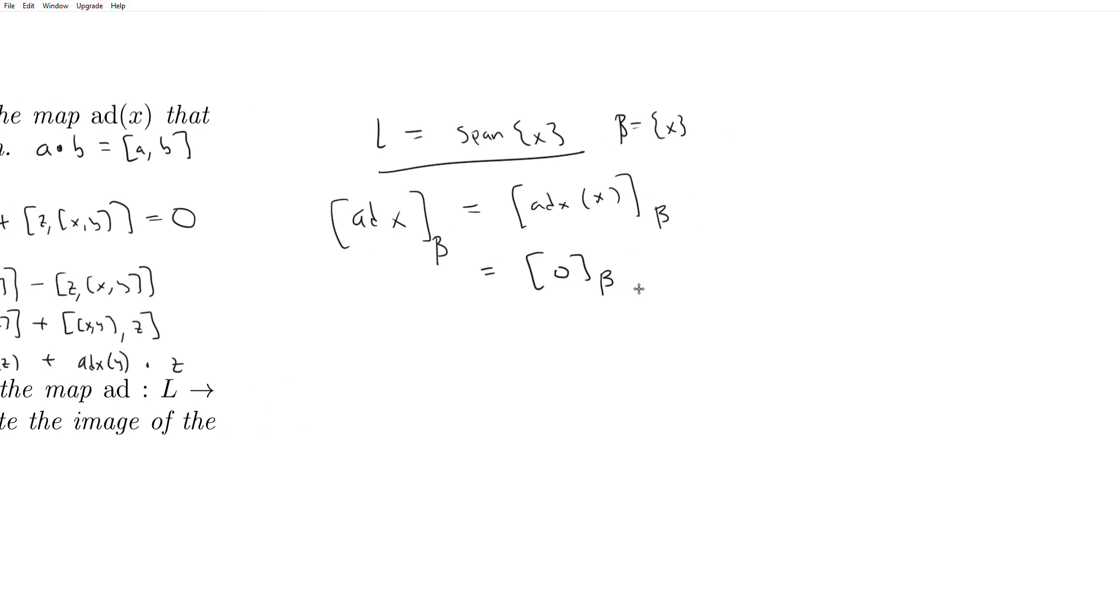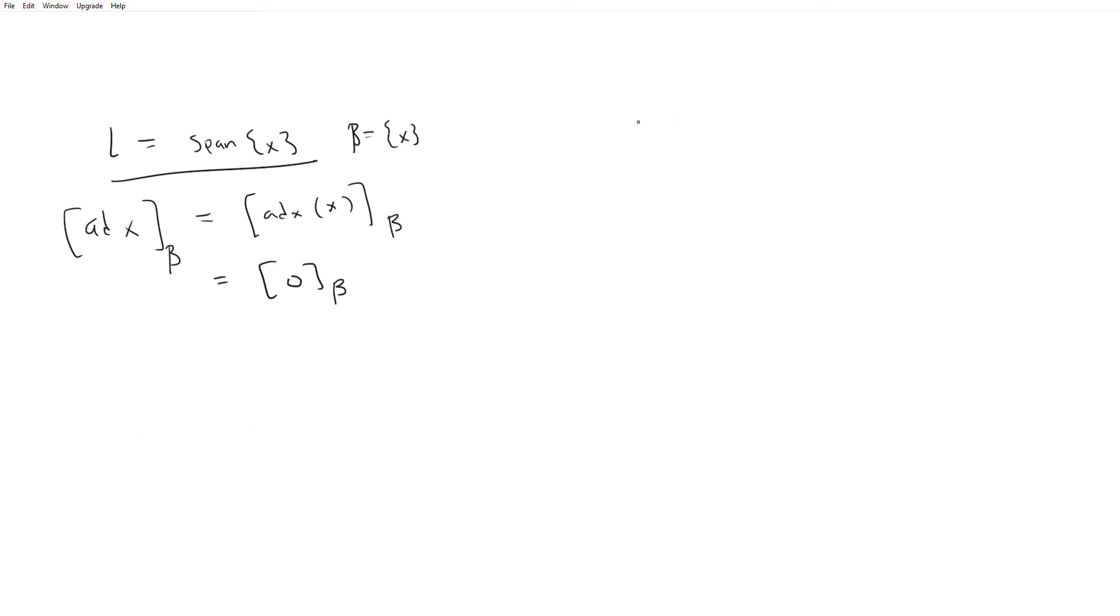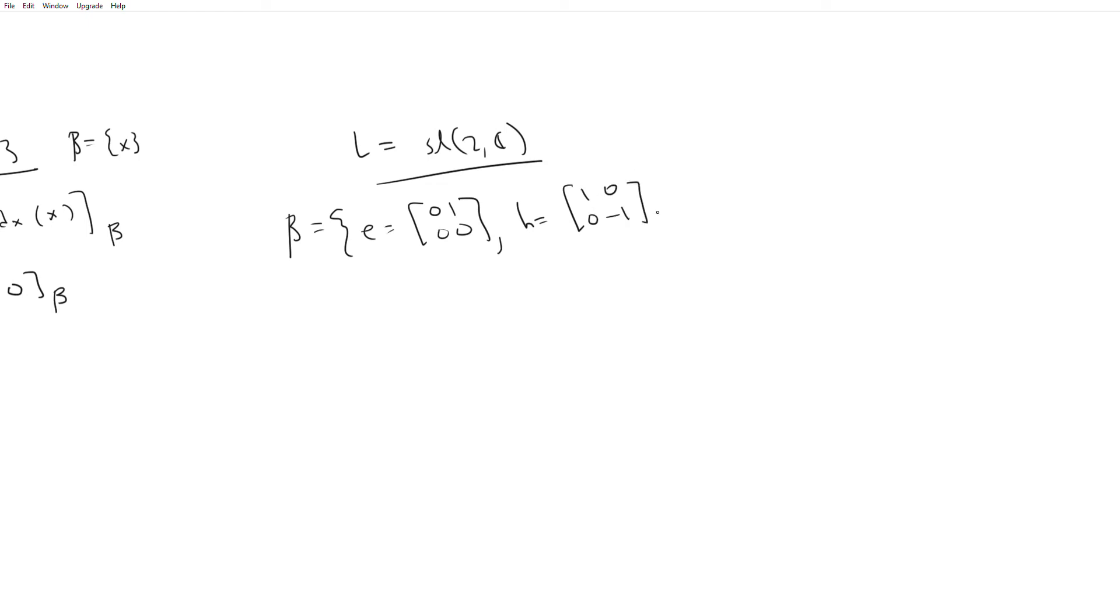Another example is SL2C. So we saw SL2F last time. I'm just going to fix the base field to be the complex numbers. So SL2C. And so recall that this thing has a basis given by E equals 0, 1, 0, 0. H equals 1, 0, 0, minus 1. And F equals 0, 0, 1, 0. And so we want to determine what the image of ad(E), ad(F), and ad(H) are in this basis.